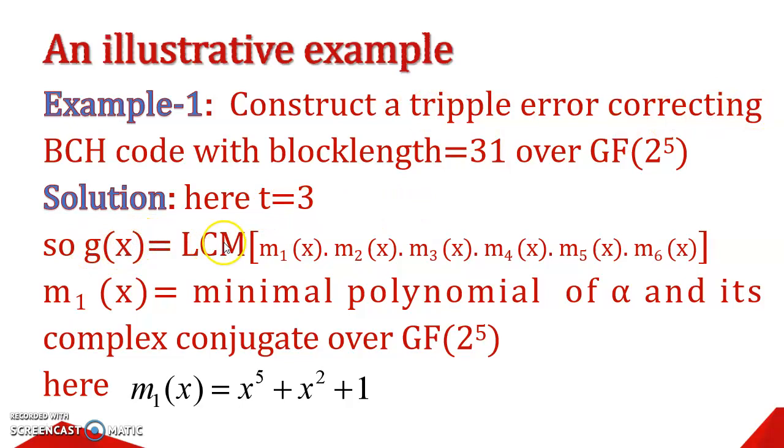So, here t equals 3 because it is triple error correcting code. So, g(x) will be LCM of m1(x), m2(x), m3(x), m4(x), m5(x) and m6(x). I already told you that m1(x) is minimum polynomial of alpha and its complex conjugates over GF(2^5). That means, m1(x) is the first field element of the GF(2^5), which is alpha. So, alpha and its complex conjugates create a minimal polynomial, which is represented by m1(x). Here m1(x) equals x^5 + x^2 + 1. If you solve the complex conjugate of alpha over GF(2^5), you can get this.